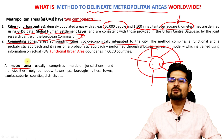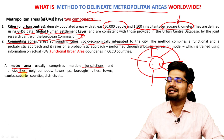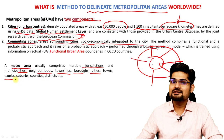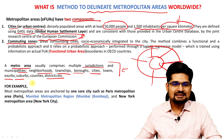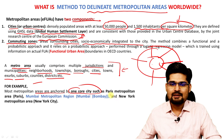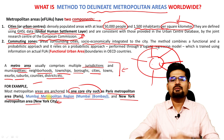A metro area comprises multiple jurisdictions and municipalities: neighbourhoods, townships, boroughs, cities, towns, exurbs, suburbs, counties, and districts. Most metropolitan areas are anchored by one core city — examples include the Paris metropolitan area, Mumbai metropolitan region, and New York metropolitan area, where a core city interacts with surrounding suburbs.